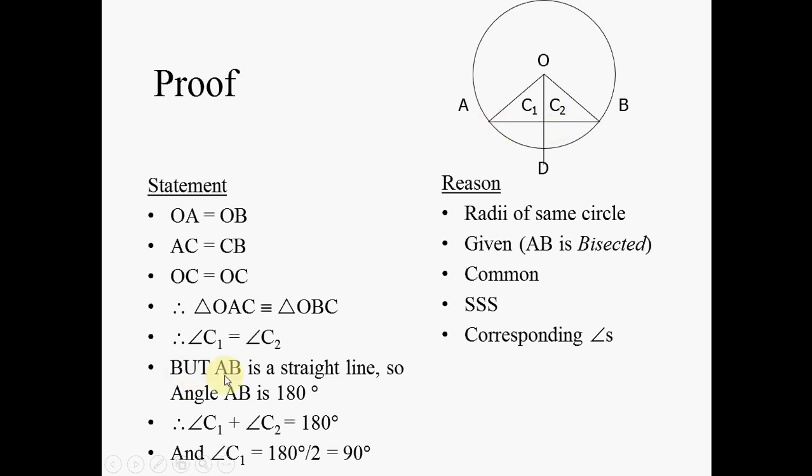And then we add: but AB is a straight line. Now here is where your English teacher and your maths teacher have a disagreement. Because your maths teacher is quite happy to use the word but, but your English teacher will point out that the word but actually means everything I've said up to now has been a lie. So a better word would be moreover or additionally or furthermore. AB is a straight line, so angle AB, and that believe it or not is an angle, a straight line angle, is equal to 180 degrees.